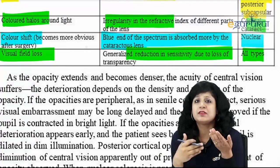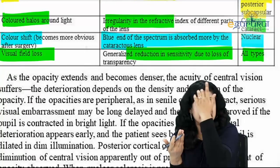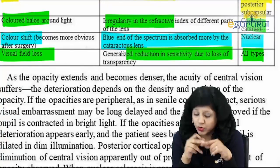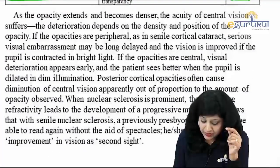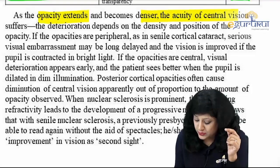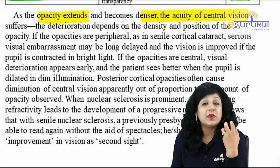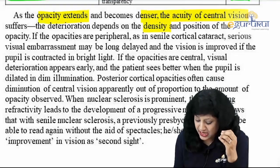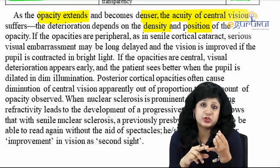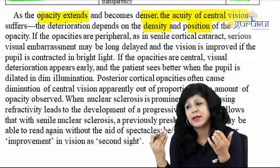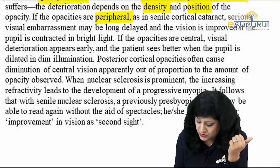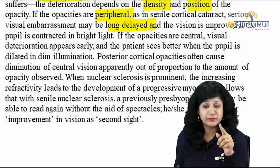Visual field loss shows generalized reduction in sensitivity due to reduced transparency and opacification in the lens, seen in all types. As opacity extends and becomes denser, central vision suffers, but real deterioration depends on both the density and position of the opacity. If opacities are peripheral, serious visual impairment will be long delayed, and vision improves when the pupil contracts in bright light.